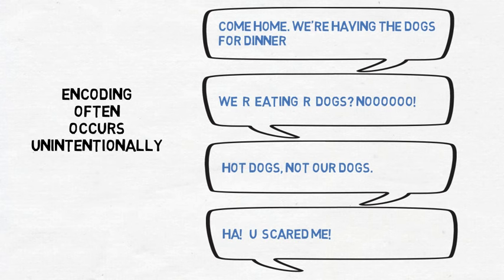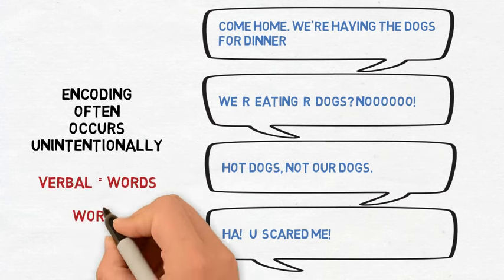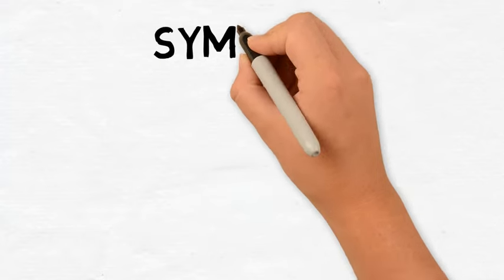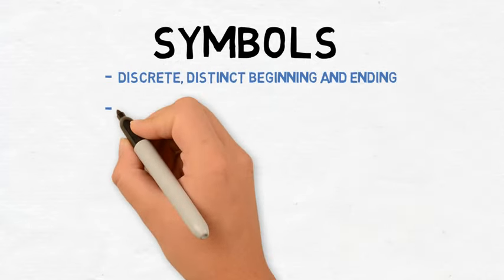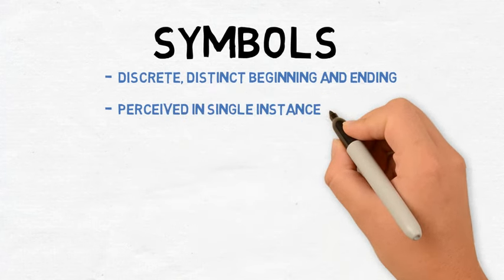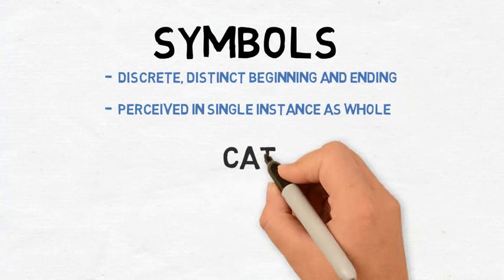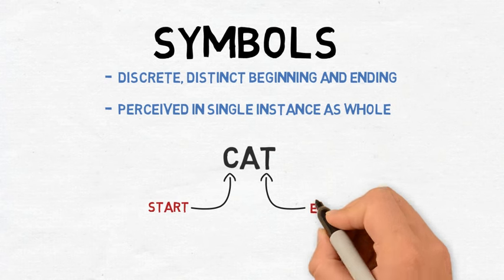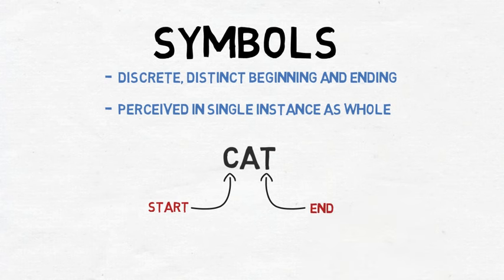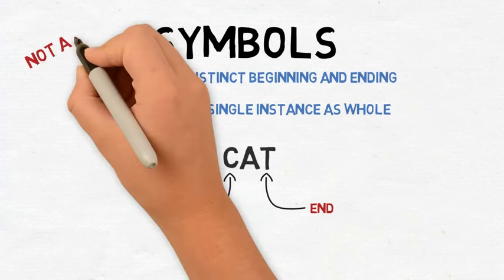Examples of encoding in verbal communication are fairly easy to perceive because verbal communication uses words, and words are symbols. Symbols are what we use to communicate our thoughts and ideas to others. Symbols are discrete, with a distinct beginning and ending, and can be perceived in a single instance as a whole. For example, we can easily discern the first and last letter of a word — it's contained, with a specific beginning and ending. While this is an example of a word, which is a symbol, not all symbols are words.